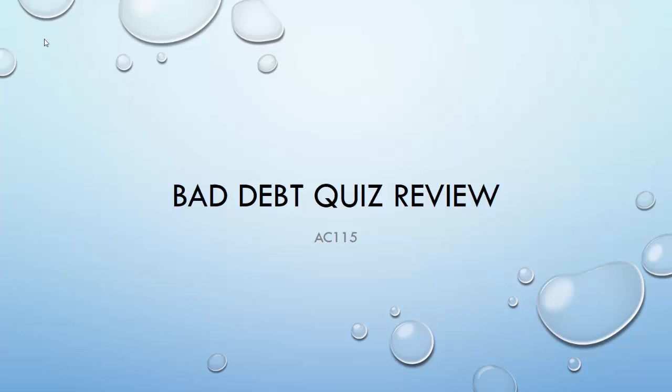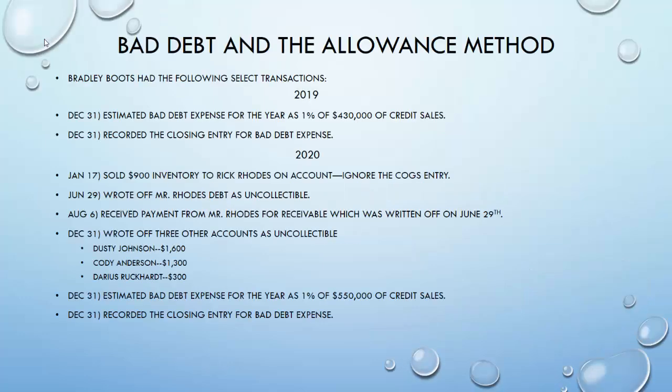Hello everyone, here is the quiz review video for bad debt, which is your Chapter 9 quiz in Pearson. The first method we're going to use for accounting for bad debt is the percent of sales method. We're going to do it for a company called Bradley Boots.